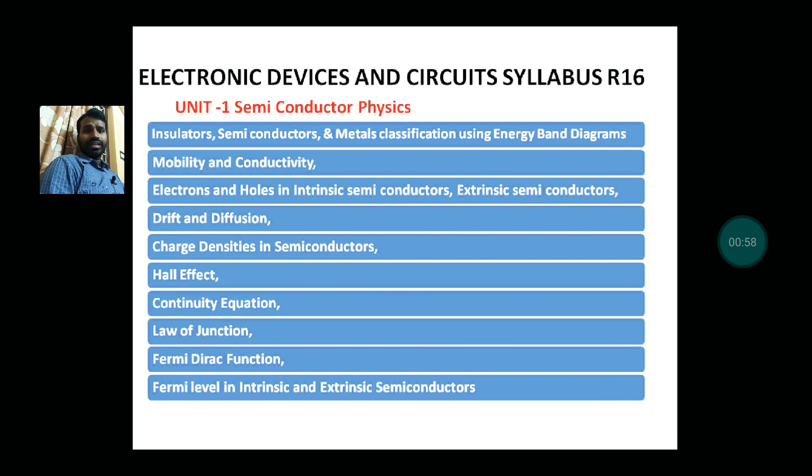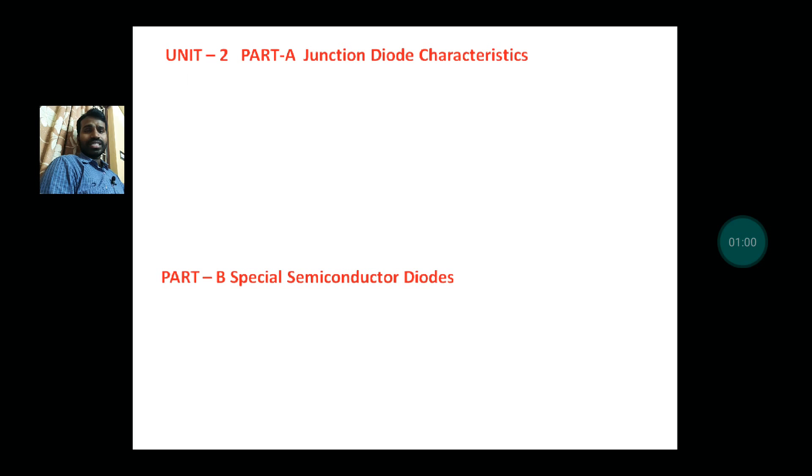Then second unit is two parts: Part A, Junction Diode Characteristics; Part B, Special Semiconductor Diodes. In Part A, open-circuited PN junction.